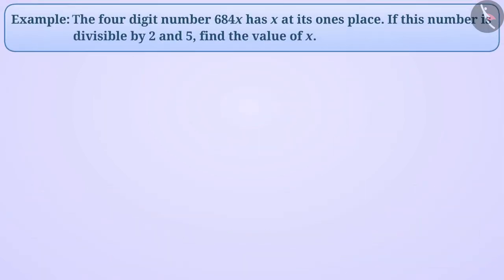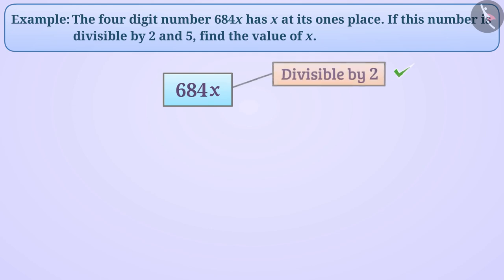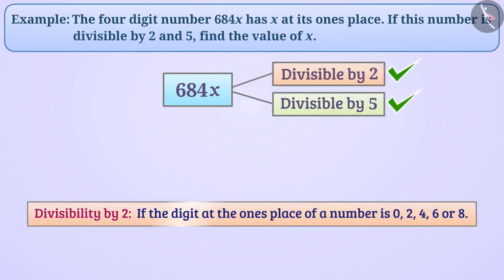Next example: the 4-digit number 684x has x at its 1's place. If this number is divisible by 2 and 5, find the value of x. We are given that 684x is divisible by both 2 and 5. The divisibility rule for 2 tells us that if the 1's digit of a number is 0, 2, 4, 6, or 8, then the number is divisible by 2. So for the number to be divisible by 2, the value of x must be 0, 2, 4, 6, or 8.